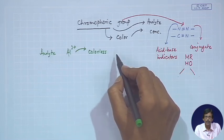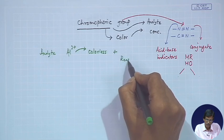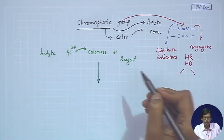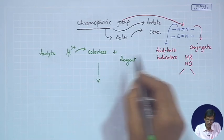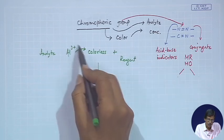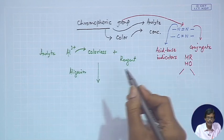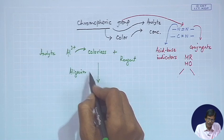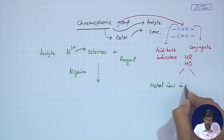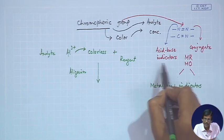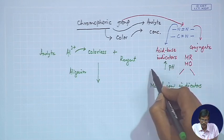If we add some reagent — a chromophoric group — that binds to the colorless analyte, we can develop color. An example is alizarin, a class of organic molecules that can give rise to color similar to metal ion indicators. Just as acid-base indicators change color with change in pH (hydrogen ion concentration), metal ion indicators change color depending on whether a metal ion is bound.